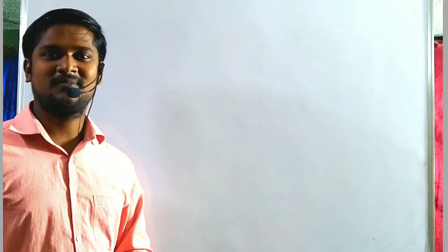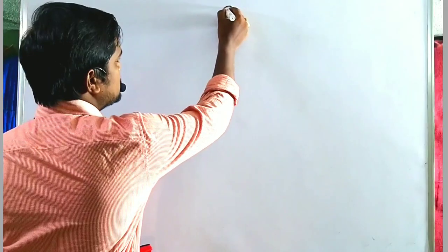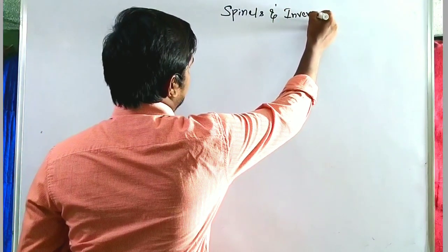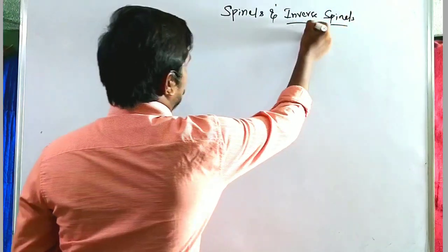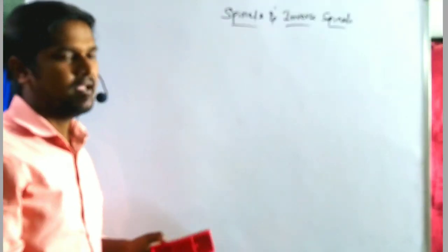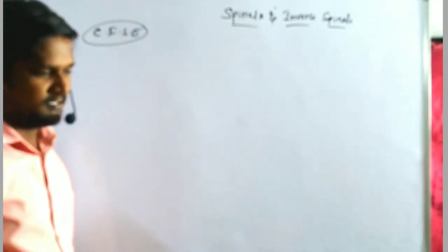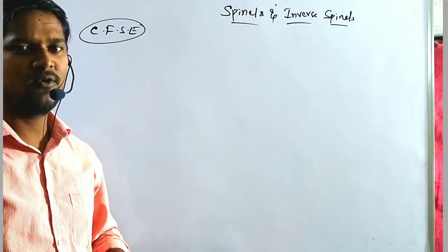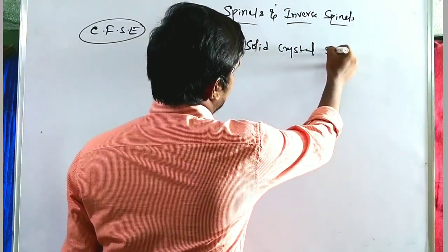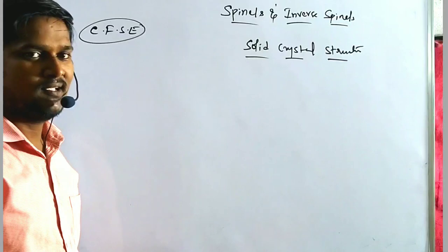Welcome to ArcTV Resonance Chemistry. We are going to discuss spinel and inverse spinel structures. Spinels and inverse spinels are one of the factors of crystal field stabilization energy, and one form of solid crystal structure — like the rutile structure, cesium chloride rock salt structure, and perovskite structure.